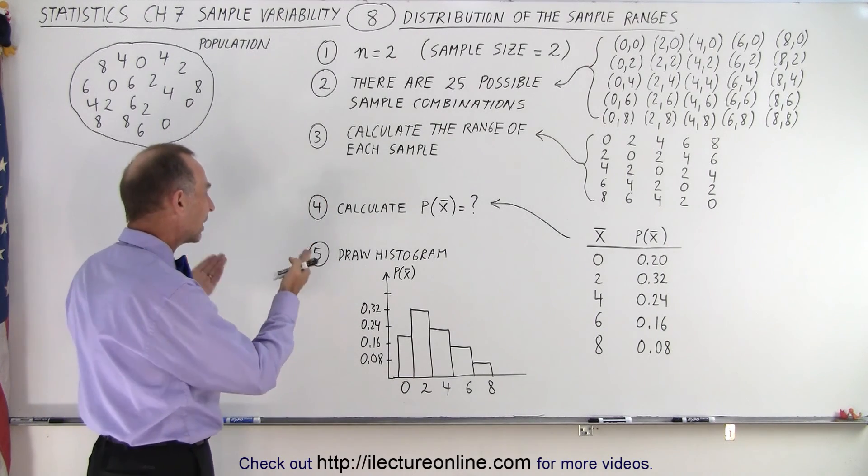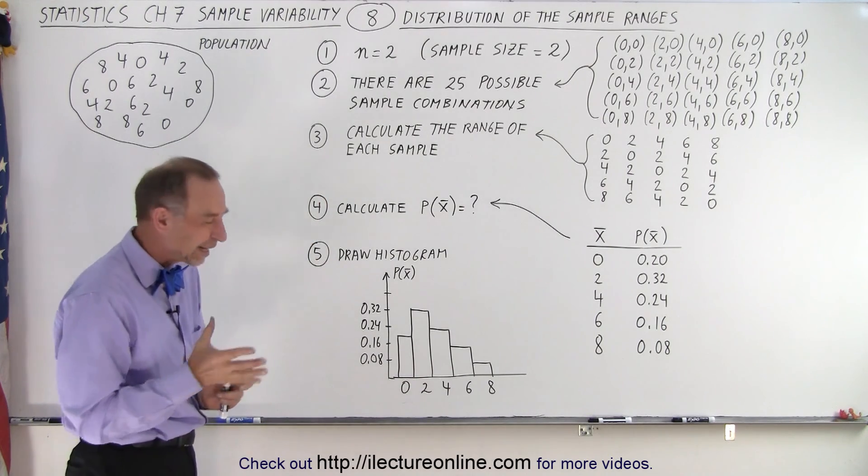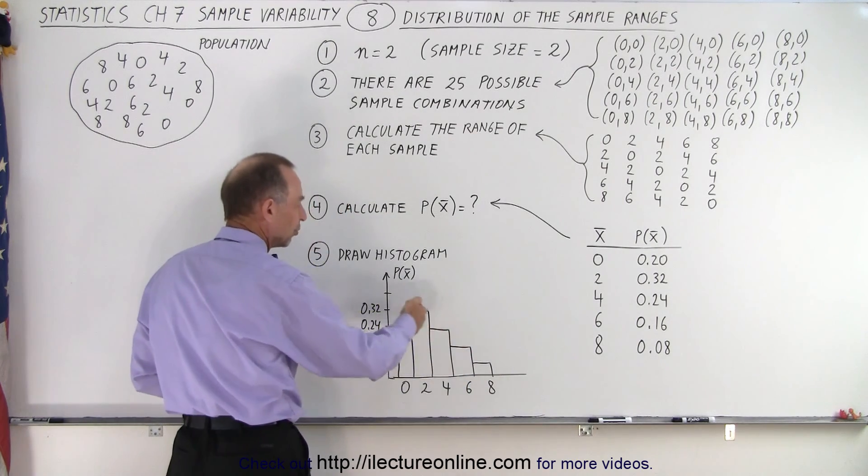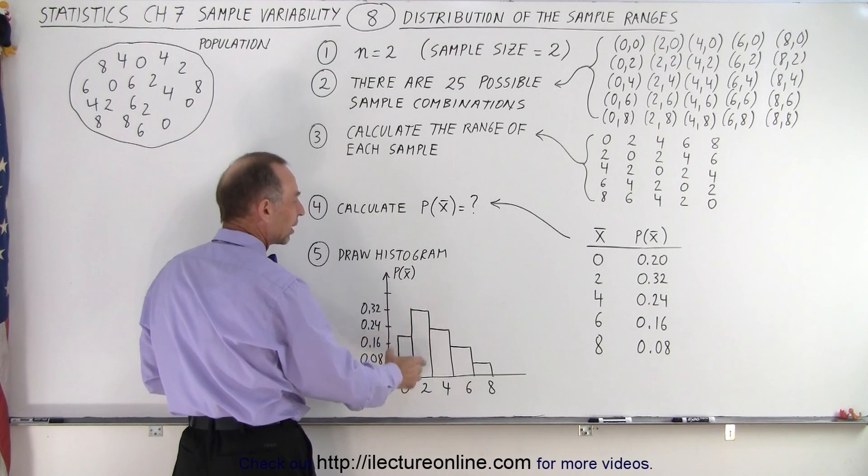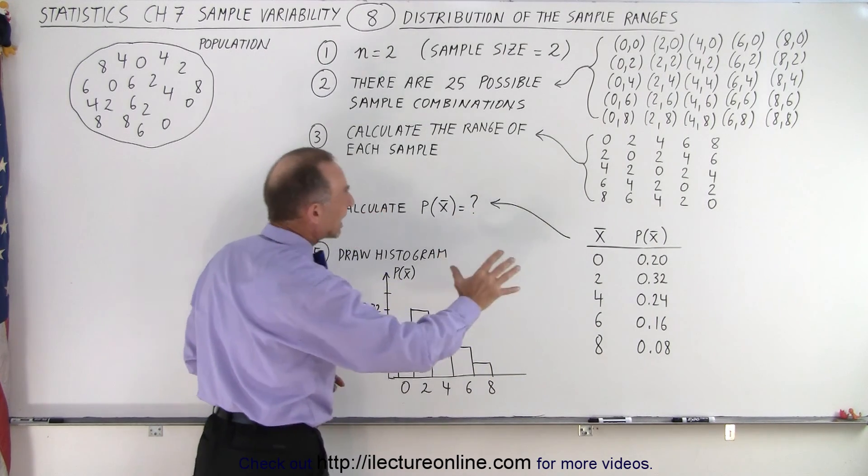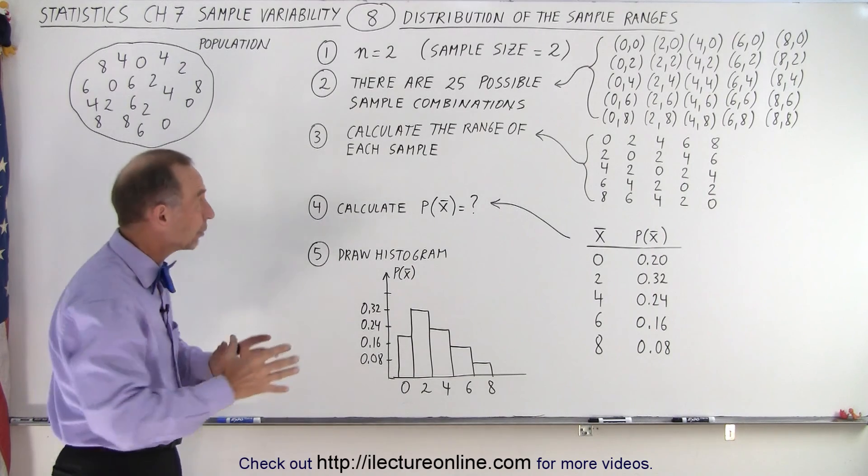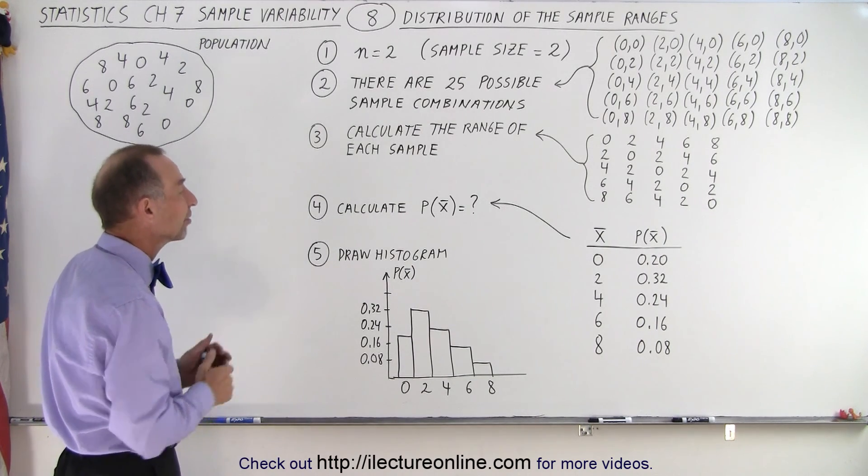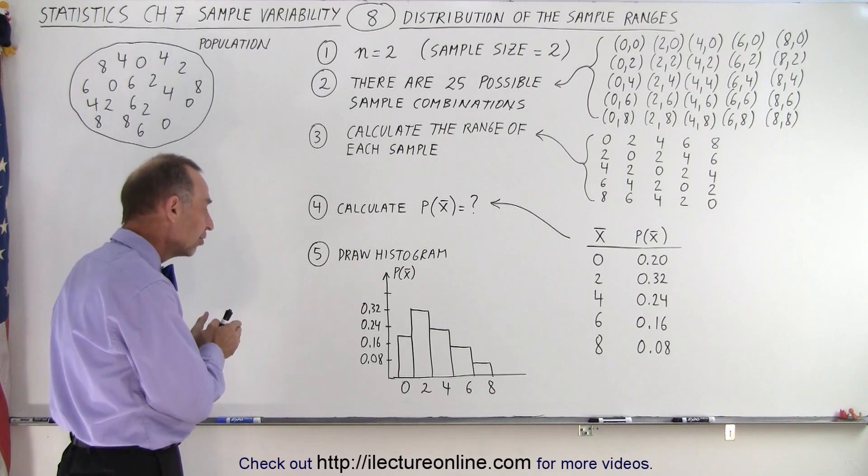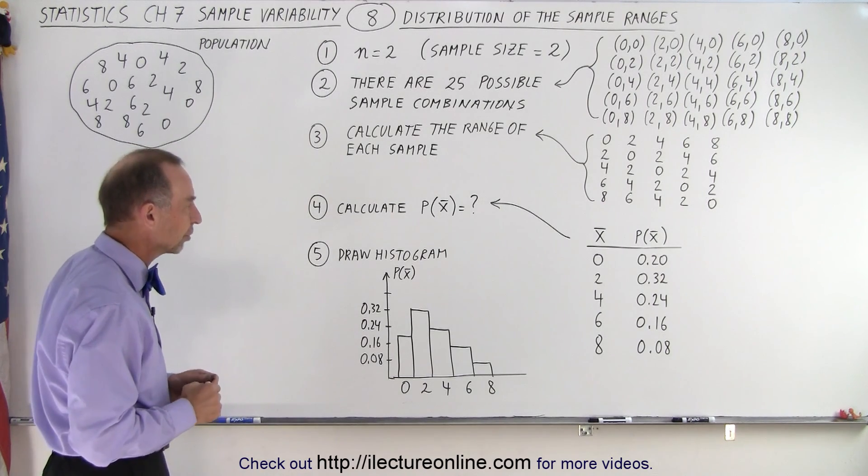And finally we draw a histogram. Notice that it's somewhat of a normal distribution but it's skewed to the right. It's more likely that you get a smaller range compared to a large range, and that's the nature when we start calculating the ranges of each of the samples, especially when the sample size is small. You can have more of the smaller ranges than you can have of the larger ranges.